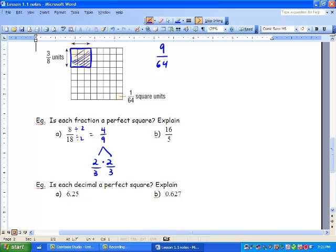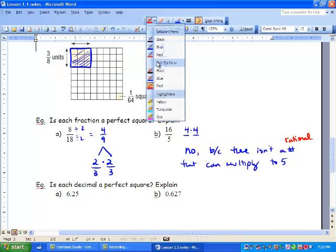Next, we can look at 16 over 5. Well, 16 is a perfect square, 4 times 4. But there's no number multiplied by itself that will equal 5. So no, because there isn't a rational number that can multiply to 5.